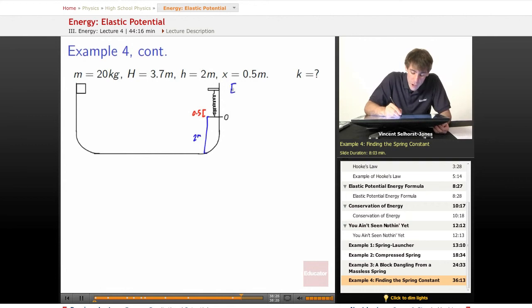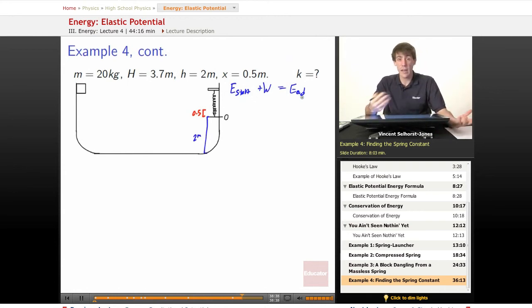So we know that energy at the start plus the work involved is equal to the energy at the end, right? So what's the work involved? We're on a frictionless half-pipe. It's a massless spring. Is there any air resistance? No. We can assume that there's no air resistance because it's not moving that fast and we're never mentioned.